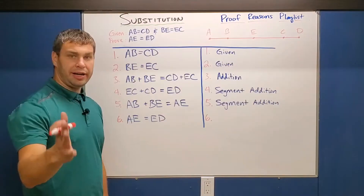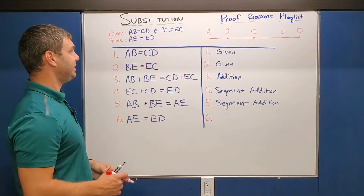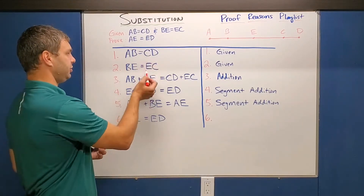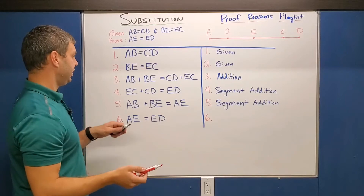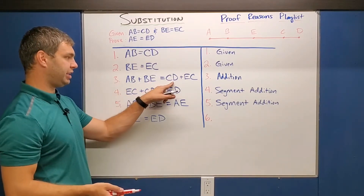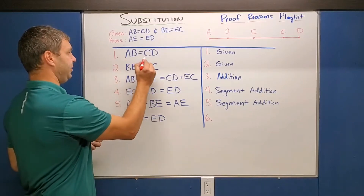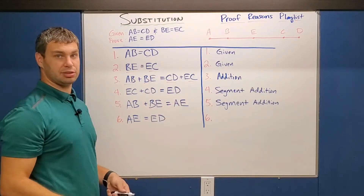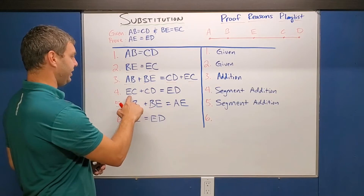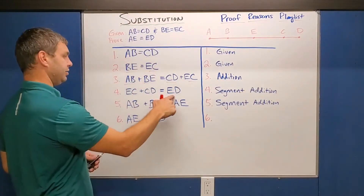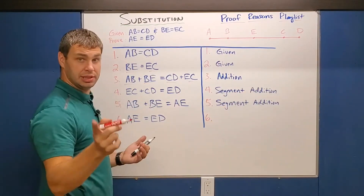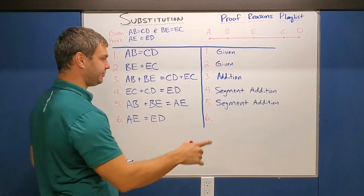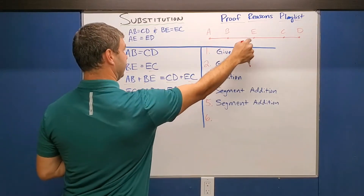Proof one: given AB equals CD and BE equals ED, we need to prove that AE equals ED. The first two parts are both in our given statement. Then we have AB plus BE equals CD plus EC — they just took AB and CD and added the same thing to both sides, so that's the addition property of equality. From the picture, EC plus CD together equals ED — that's segment addition — and AB plus BE equals AE — also segment addition.